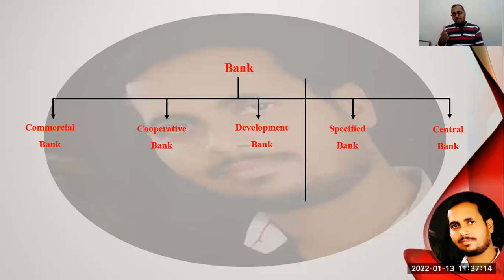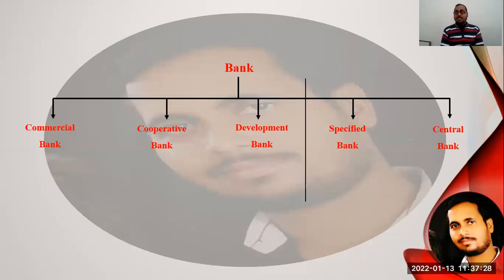The fourth type is the specified bank, meaning a specific purpose bank — those banks made for doing a specific task. Such kind of bank is a special purpose bank. The fifth is the central bank — the supreme bank — which is responsible for providing monetary policies, issuing currency, and credit control over all other banks.